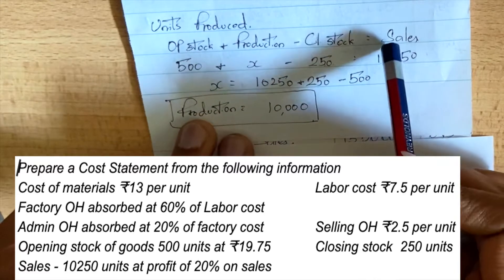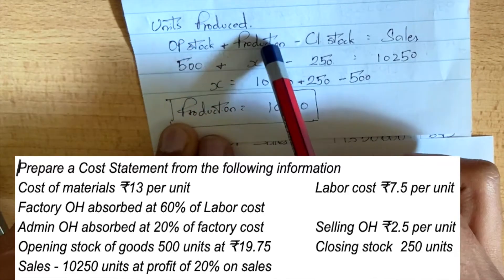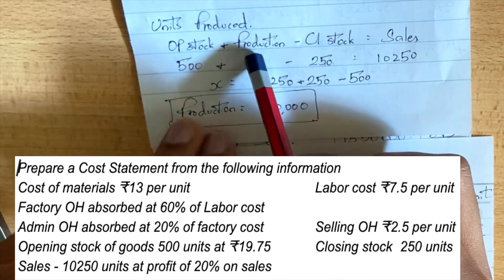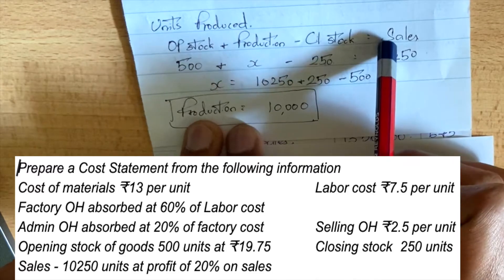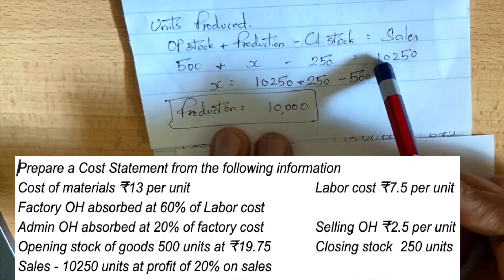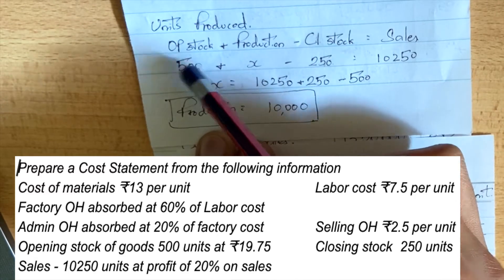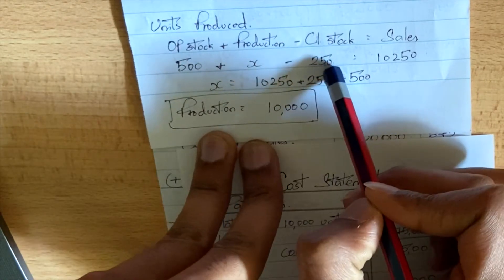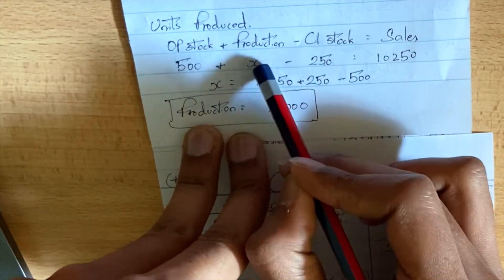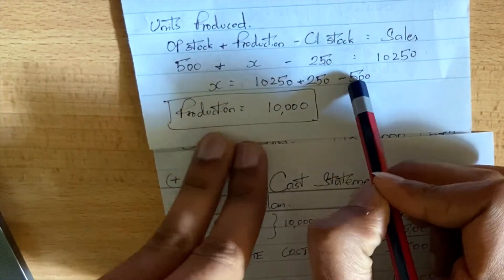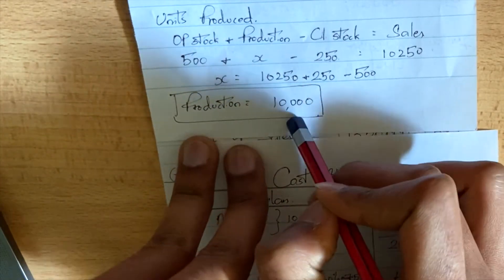Using the sales formula, we work out the production units required. We have our sales figure, and from that we determine we have to produce for 10,000 units sold. So the production quantity is confirmed as 10,000 units.